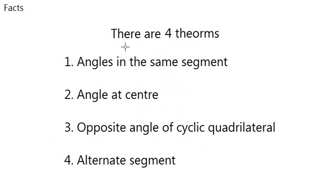So there are in total 4 theorems in this qualification that you need to learn. The first one will be angles in the same segment. The second one will be angle at center. The third one will be opposite angle of a cyclic quadrilateral. And lastly, alternate segment. These will not make any sense right now but I will explain them in the example questions.